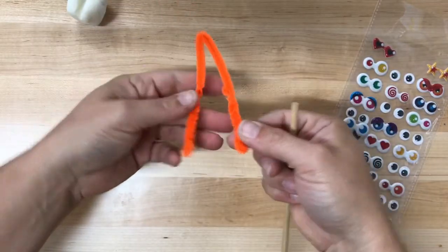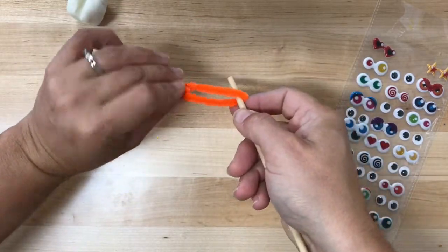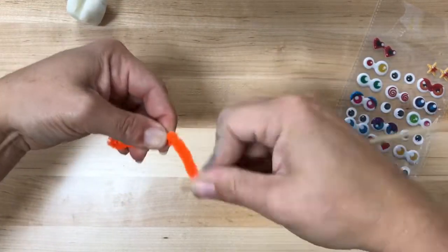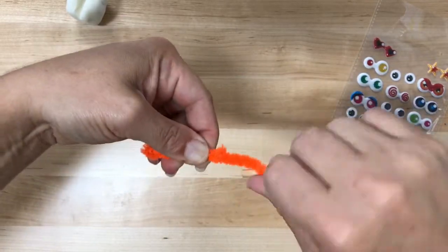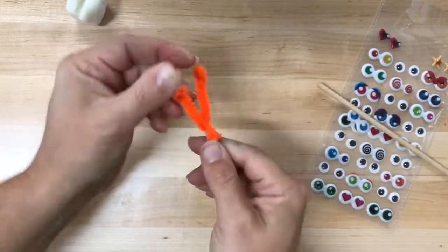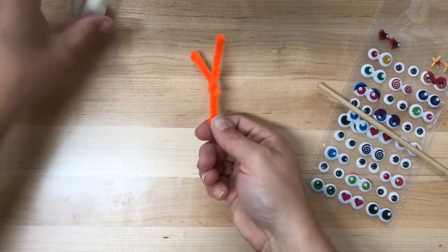Now we're going to take that V and we're going to twist the lower half again. So pinching it and twisting the top. And this should create something that looks kind of like the letter Y.